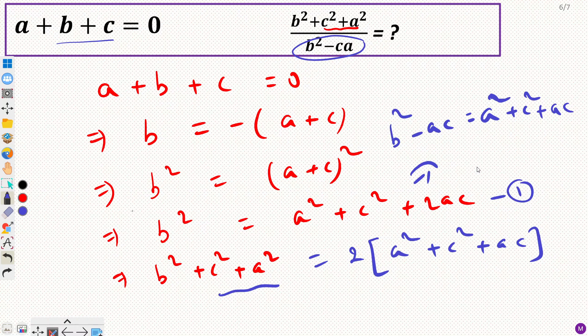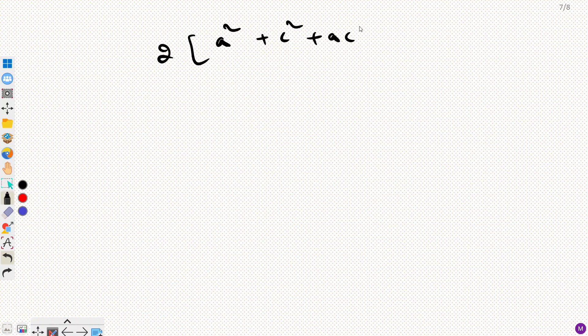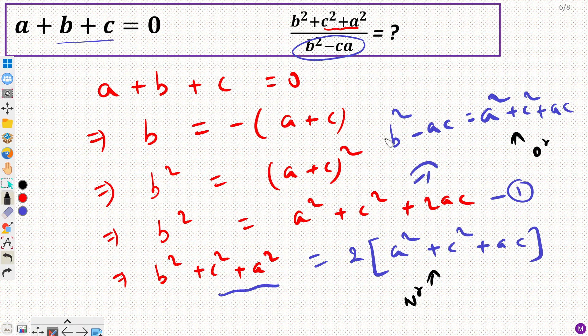So we found - this was my numerator, this is my numerator and this is my denominator. So you can write this as 2 times a squared plus c squared plus ac, divided by my denominator is a squared plus c squared plus ac.